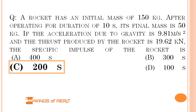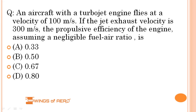Next question. An aircraft with a turbojet engine flies at a velocity of 100 m/s. If the jet exhaust velocity is 300 m/s, the propulsive efficiency of the engine — assuming a negligible fuel-to-air ratio — is: (A) 0.33, (B) 0.50, (C) 0.67, or (D) 0.80.